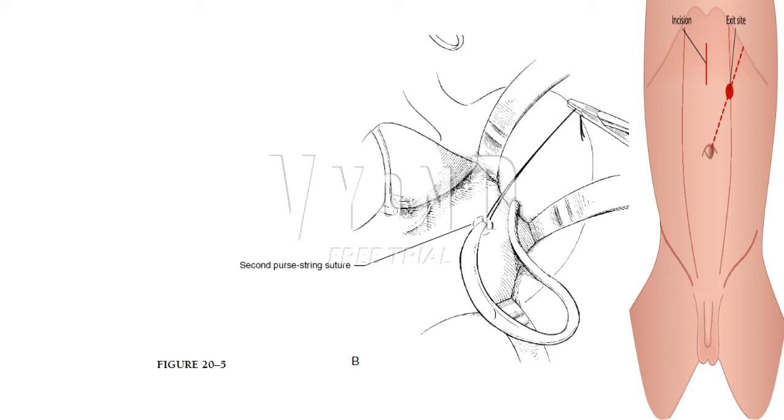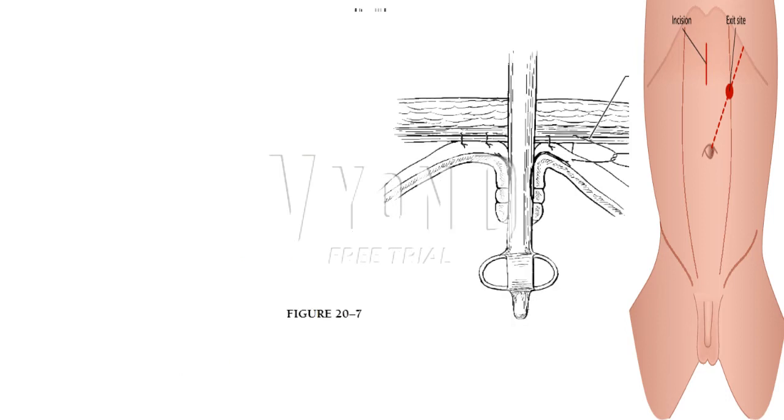A: The first purse string suture is secured around the catheter. Figure 25B. The second purse string of 2-0 silk sutures is placed around the tube and secured.